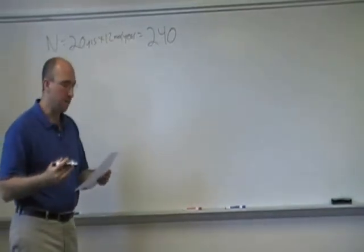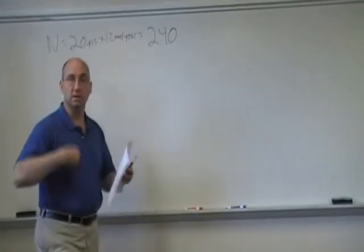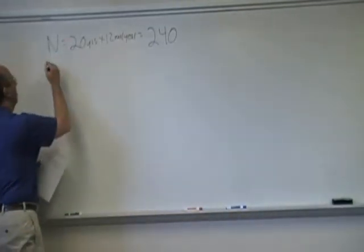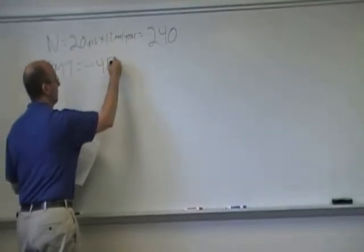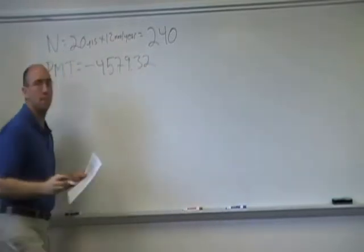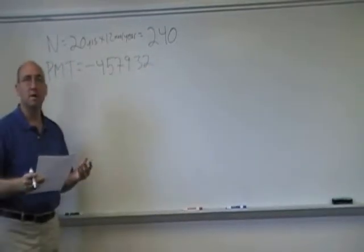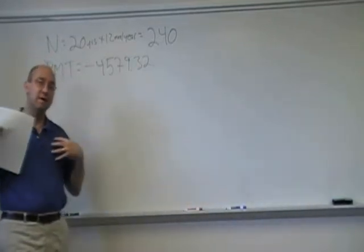So we know that each payment is equal to $4,579.32. Dice K is going to be paying these, so in our financial calculator, we want it to be a negative. PV, we know that for the present value for this loan, it's as if you received $500,000.